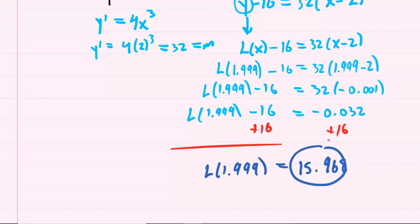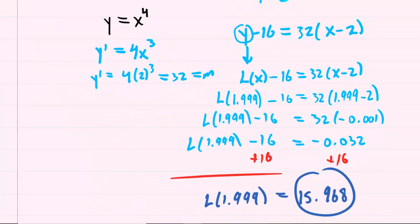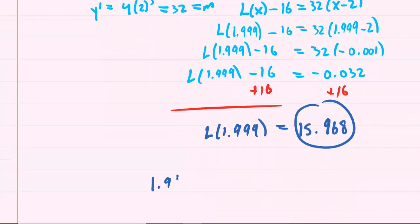So let's go back to the graph and make sure we understand what this 15.968 represents. It represents the y coordinate of that blue point on the tangent line right here, 15.968. And since that's extremely close to 1.999 to the fourth, that means that we can estimate 1.999 to the fourth as 15.968. So this is the correct answer.